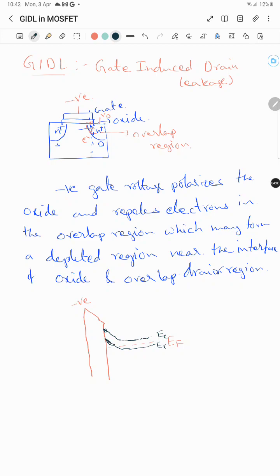High negative voltage creates a valence band also. This will allow band to band tunneling within the drain region.